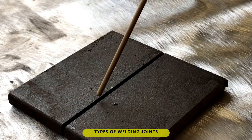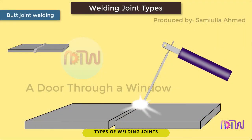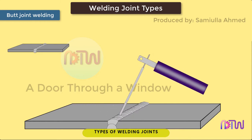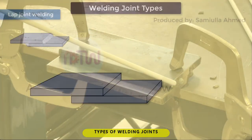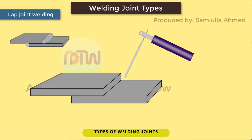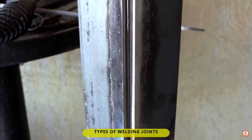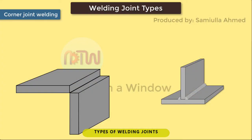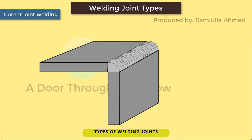Types of welding joints. 1. Butt joint: a welding of two pieces of aligned metal by means of joining their ends end-to-end on a straight line. 2. Lap joint: a welding of two pieces of parallel metal by means of overlapping their ends at a certain length. 3. Corner joint: a welding of two pieces of perpendicular metal by means of joining their ends at a right angle, forming an L-shape or a corner.